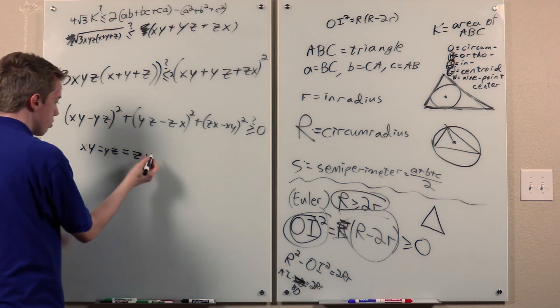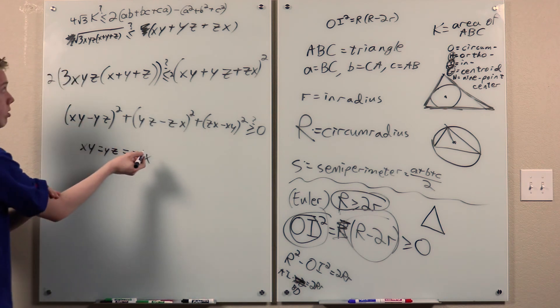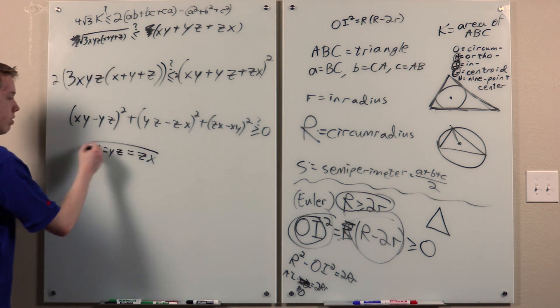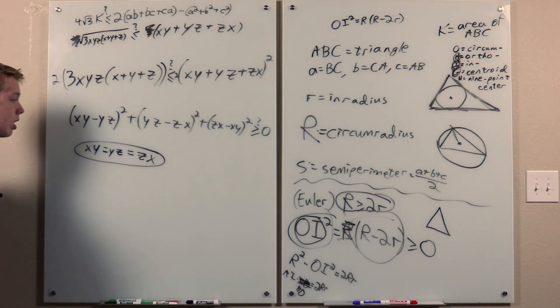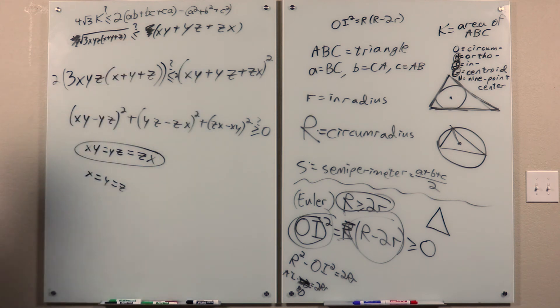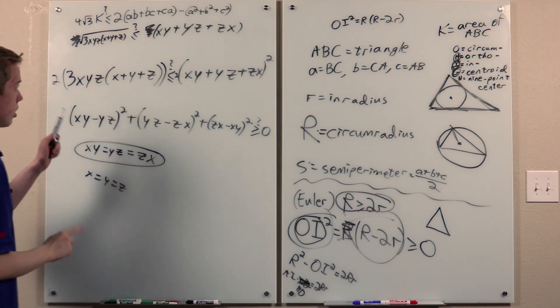Now, for the equality case, for x, y, and z to be all... we would have to have this. This is equivalent to that. So, for equality to hold, we would have to have this. And for x, y, and z to be positive and have this, we would need this, which implies that the triangle is equilateral. And it can be verified that that gives us equality.